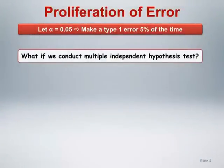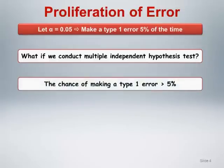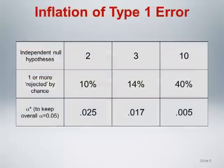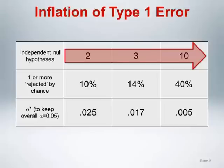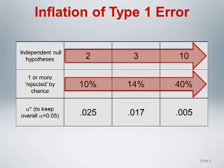What if we conduct multiple independent hypothesis tests? The chance of making a type 1 error will be greater than 5%. We can quantify the proliferation of type 1 errors. If we conduct multiple independent hypothesis tests at the 0.05 level of significance, and in actuality all of the null hypotheses we are testing are true, then as the number of independent null hypotheses tested increases, the chance that one or more of those true null hypotheses will be incorrectly rejected also increases.